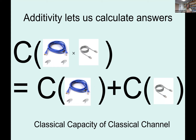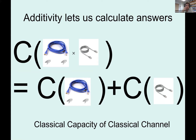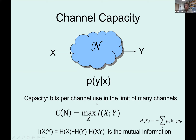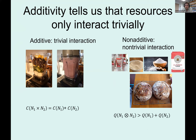The nice thing is that we had this asymptotic question — what happens with many uses of the channel — and found an answer in terms of a single use of the channel. That's because in the classical setting we have additivity of capacities: if I evaluate the capacity of two channels used in parallel, the capacity of that joint system equals the sum of the individual capacities. That allowed us to substantially simplify the formula for the classical capacity of a classical channel.